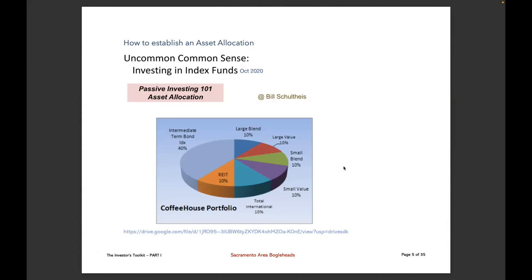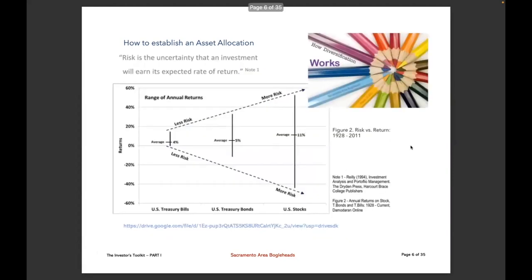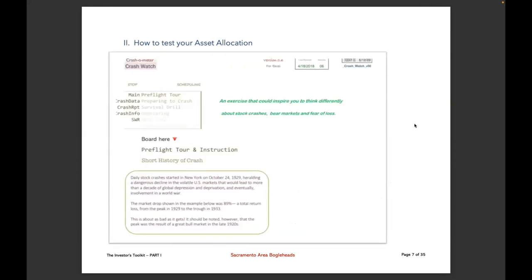At the end of this presentation, when I send out the video links, I will include all the URLs and names for all the documents and tools I'm sharing today. Continuing on the topic of establishing an asset allocation, there's also a presentation from March 2021 that may be helpful because it discusses risk versus return — an important relationship in setting your asset allocation and selecting your investments.